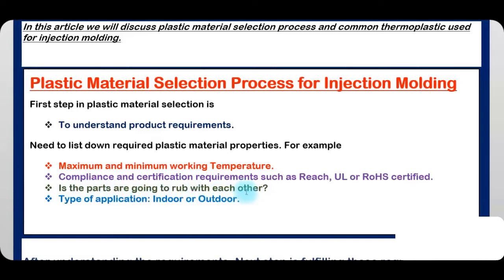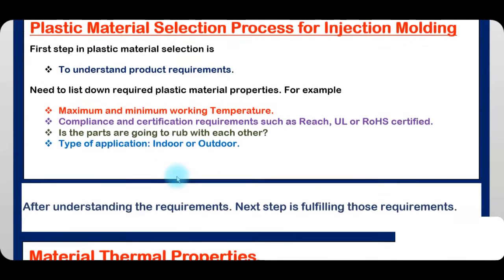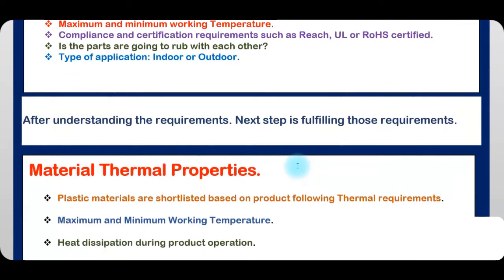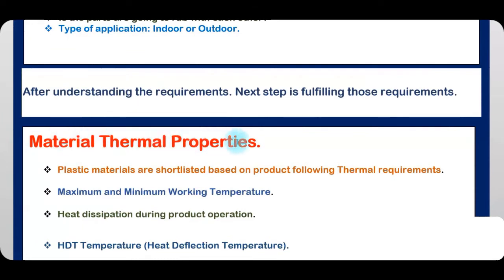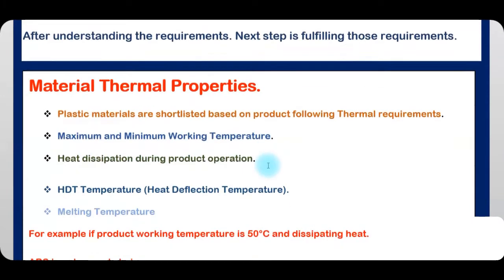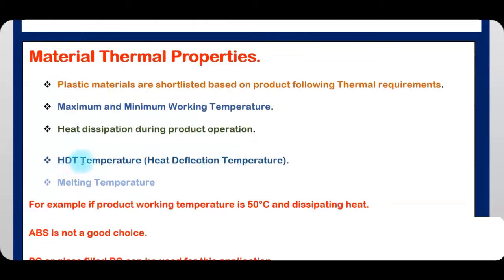Also consider whether parts will rub against each other, and the type of application — indoor or outdoor. After understanding the requirements, the next step is fulfilling those requirements. Material thermal properties: plastics are shortlisted based on the following thermal requirements — maximum and minimum working temperature, heat dissipation during product operation, and HDT (Heat Deflection Temperature).